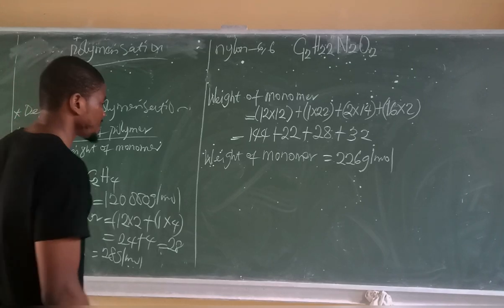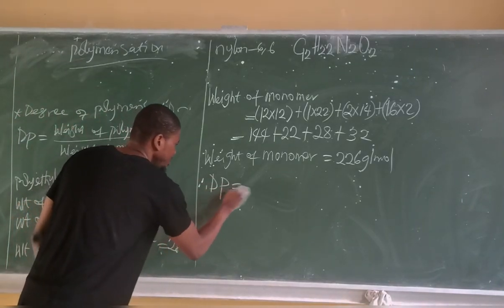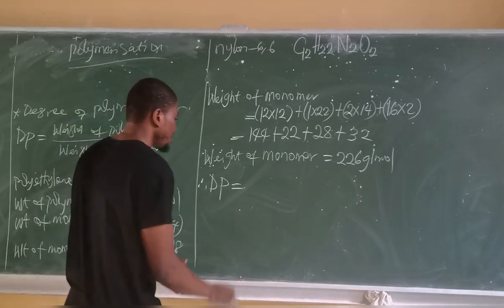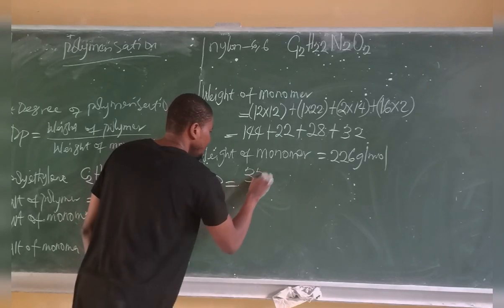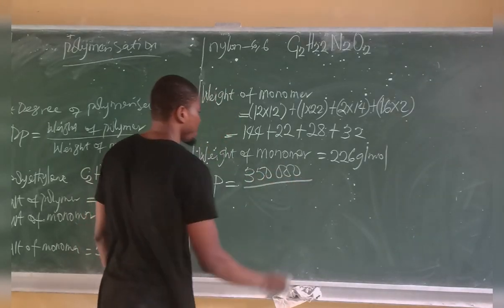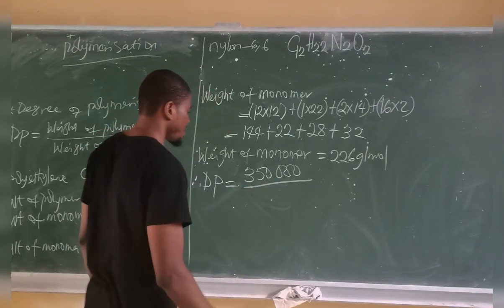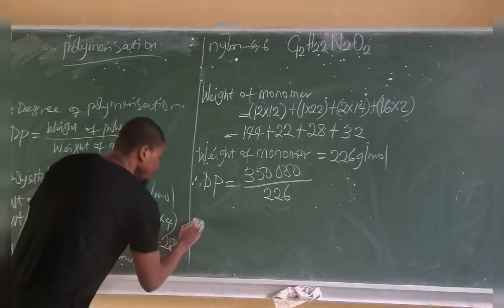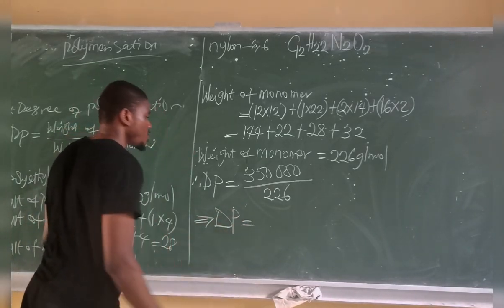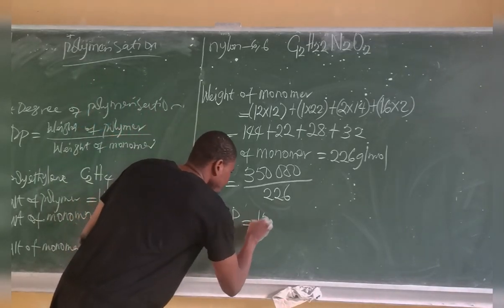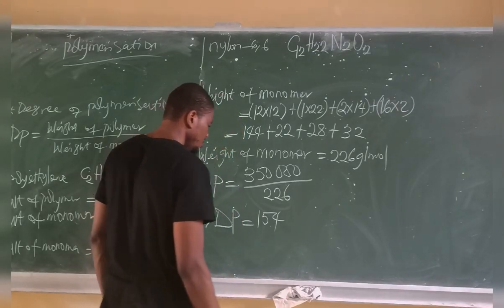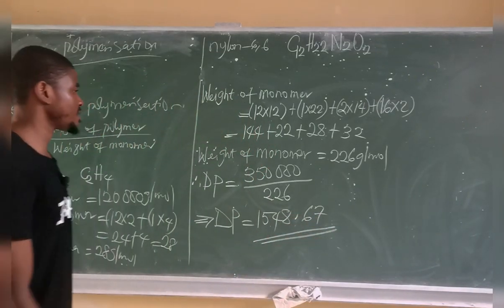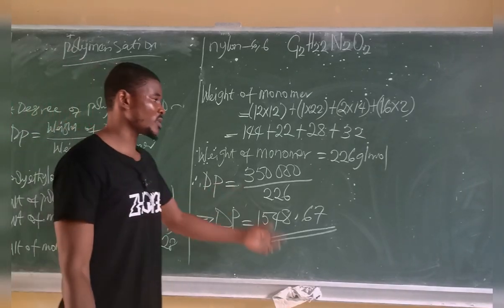From here we can calculate the degree of polymerization. D.P. equals the weight of the polymer — 350,000 grams per mole — divided by the weight of the monomer, which is 226 grams per mole. So 350,000 ÷ 226 gives us a degree of polymerization of approximately 1,548.67 for nylon 6,6 with this molecular weight.